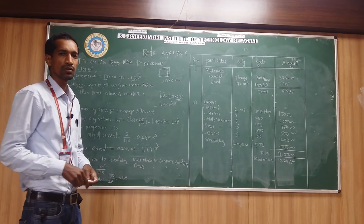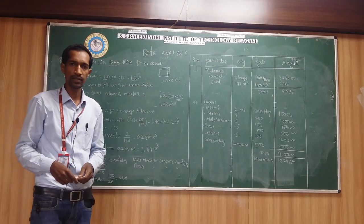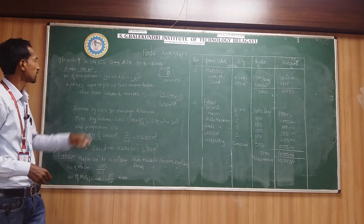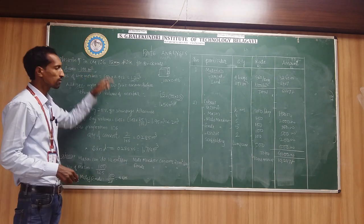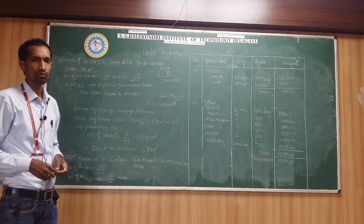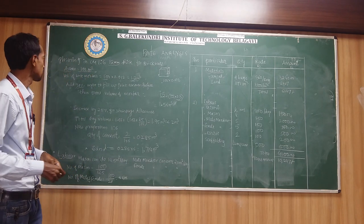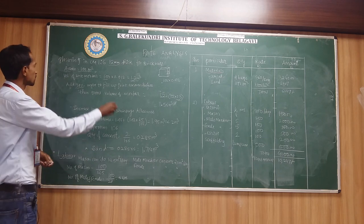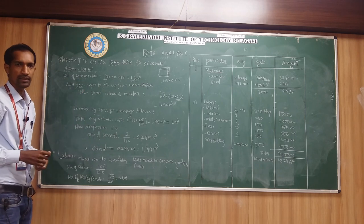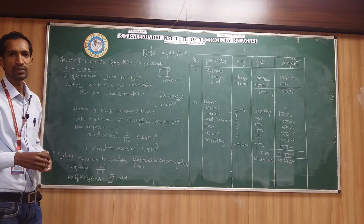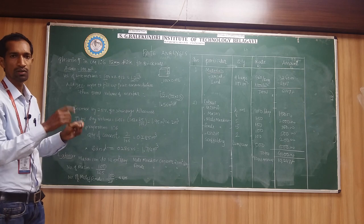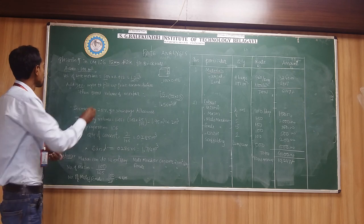In this class, we are going to learn the rate analysis of plastering — cement mortar 1 is to 6, 12 mm thick for brickwork. Plastering means the unit will come in meter square, and we calculate using length and breadth.